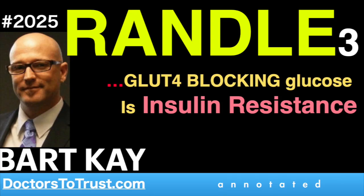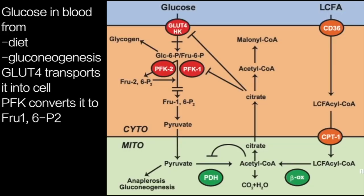Any carbohydrate that you consume on any given day almost certainly is going to end up being a problem in terms of the Randall cycle. Glucose in the bloodstream — glucose outside the cell — is delivered to the cell because you have glucose in your blood: A, because of gluconeogenesis, and B, because you've consumed carbohydrates in your diet.